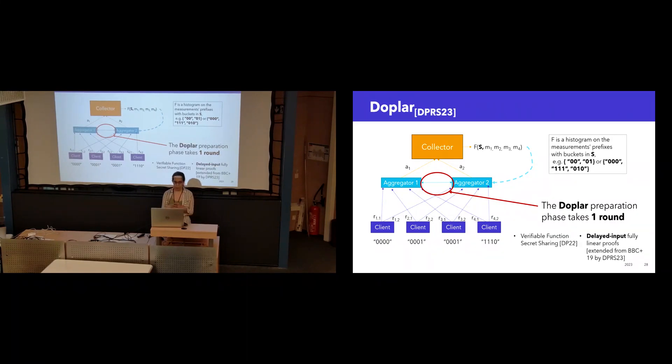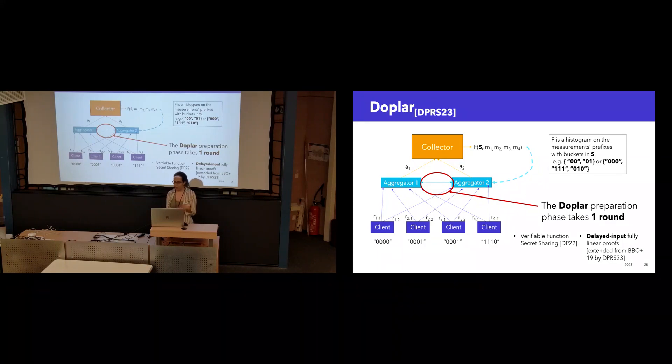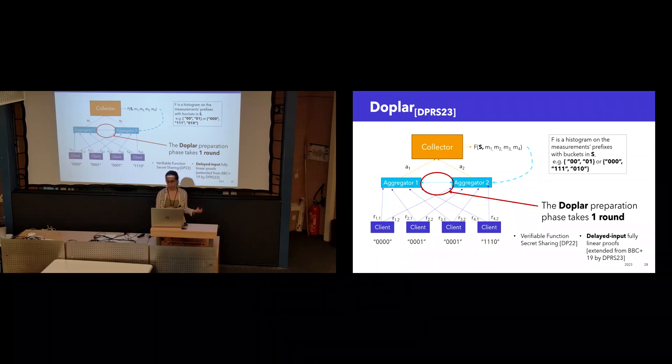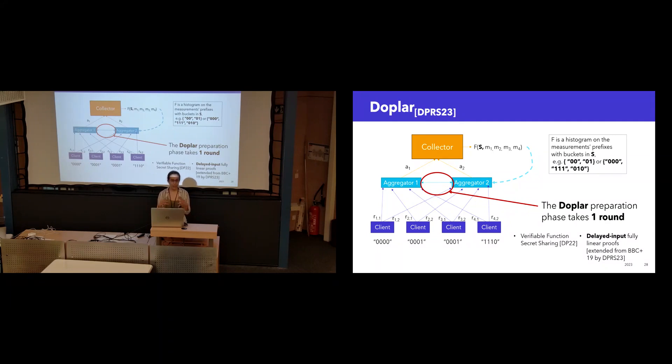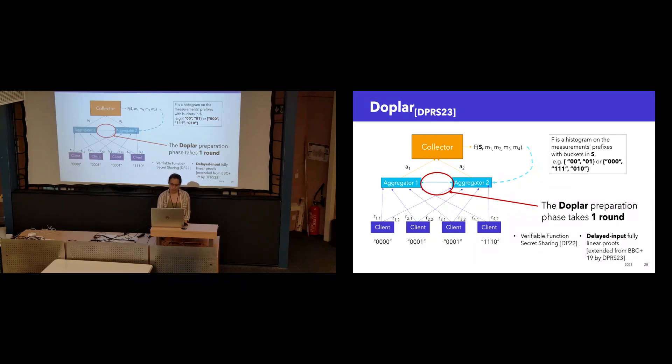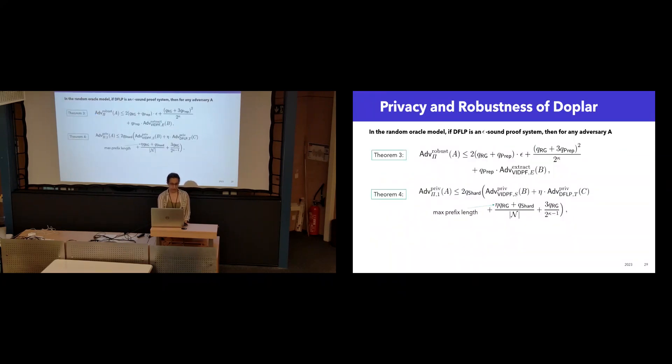So we introduce a new protocol called Doppler, which is a variant of Poplar that only requires one round of communication for validation. And it does this by using a verifiable function secret sharing technique from Dicaster and Croniadu. And we also take the fully linear proofs from PRIO3 and we make them delayed input, which means that the client doesn't have to know what measurements it's proving. And this is really important for Poplar1 in order to protect the privacy of the values in S.